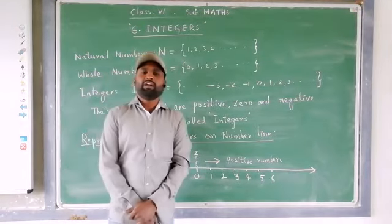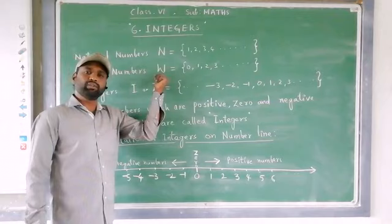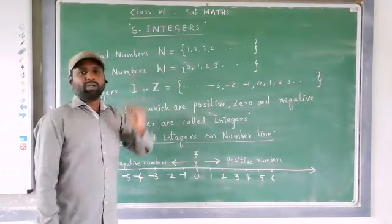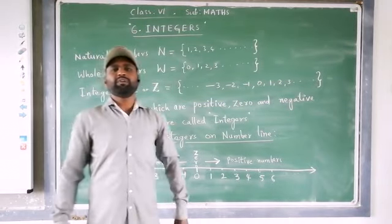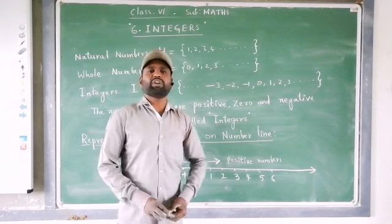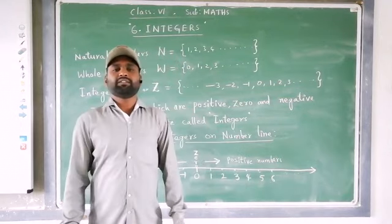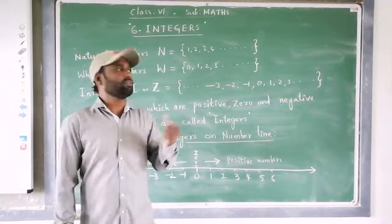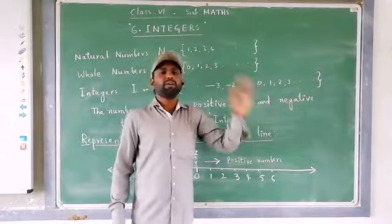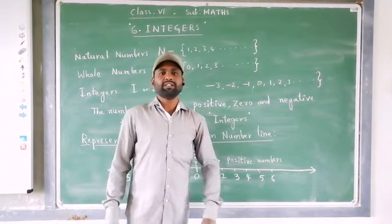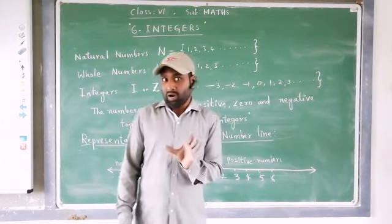In your previous classes, we have learnt about natural numbers. Let us recall: what is meant by natural numbers? Generally, whatever numbers we use for counting — 1, 2, 3, 4, 5, 6, and so on — these general counting numbers are known as natural numbers. In this set, there is no 0, no fraction, no decimal, and no negatives at all. Only positive numbers starting from 1, 2, 3, so on.